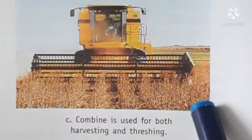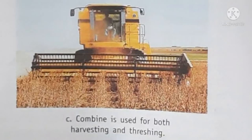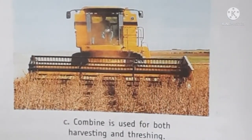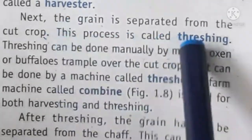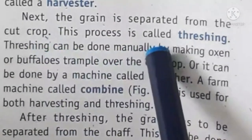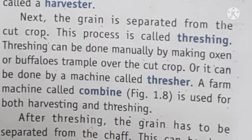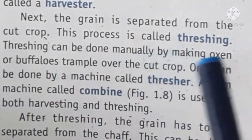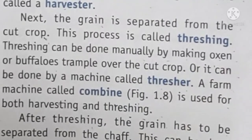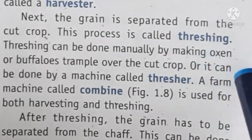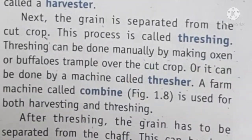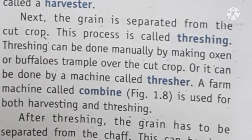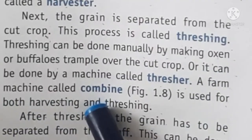A combined harvester machine can perform both harvesting and threshing. Machines are used to harvest the crops. Once you have cut the crop, the grain must be separated from the cut crop — this process is called threshing. Threshing can also be done manually by folding the cut crop and beating it on the ground so the grain falls off. Machines called threshers can also do this. Combine harvesters can do both harvesting and threshing together.